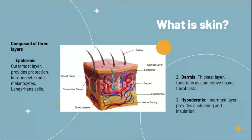Finally, the innermost layer of skin is called the hypodermis. Its main role is providing insulation and cushioning between the skin and skeletal structures, and it also functions as a sort of energy storage area.